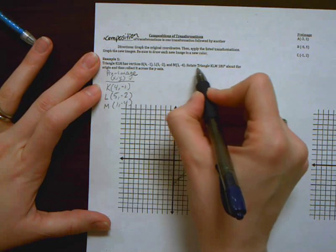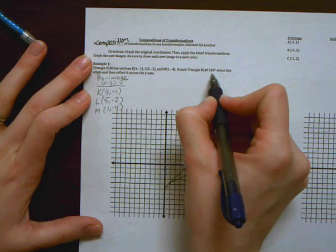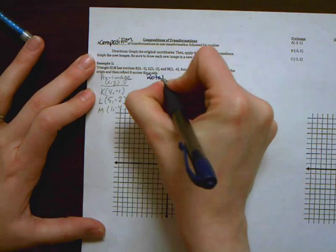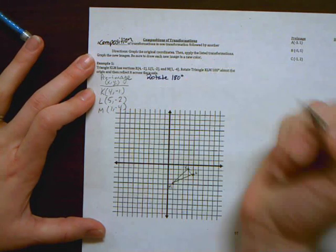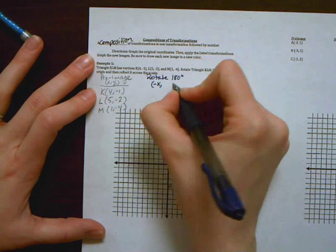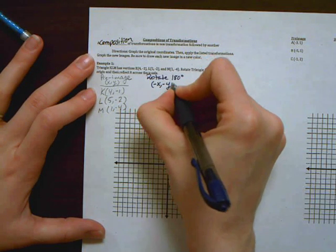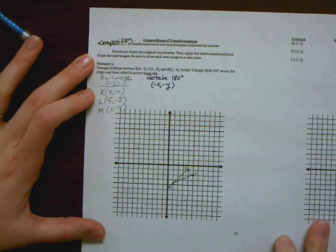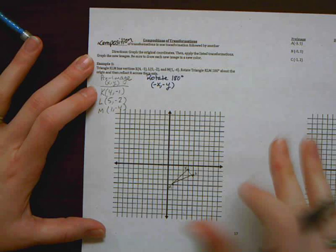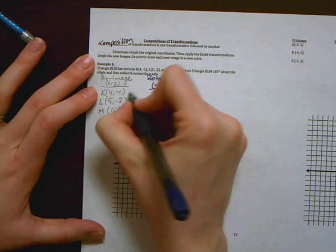So the first transformation is to rotate triangle KLM 180 degrees. So to rotate 180 degrees, regardless of whether you're going clockwise or counter-clockwise, the rule is we take our original coordinates and we change all the numbers to their opposite. It says negative, but really it just means the opposite of whatever it was to start with.